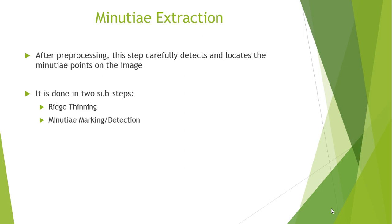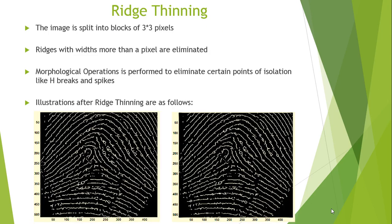Next, we come to the minutiae extraction step. In this step, proper detection and tracking of minutiae points is done on the fingerprint image using two sub-steps: ridge thinning and minutiae marking or detection. Ridge thinning splits the image into blocks of 3x3 pixels and ridges with widths greater than 1 pixel are eliminated. After that, morphological operations are performed to remove certain points of isolation like H-bricks and spikes. The images obtained after ridge thinning are shown in the diagrams.